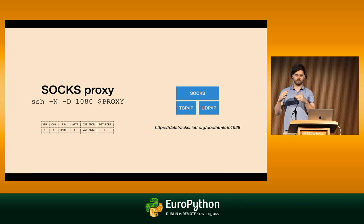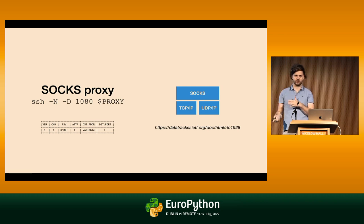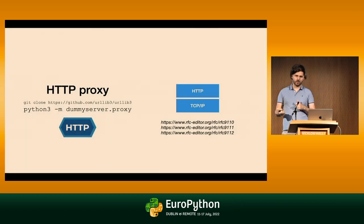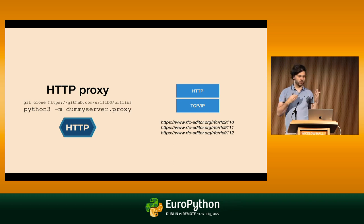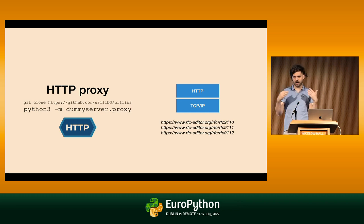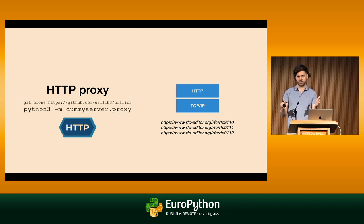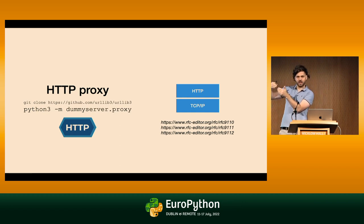I would not expose a SOCKS proxy over the public internet. The protocol is simple, it does not support encryption, and there are only basic authentication options. Compared to SOCKS, HTTP proxies are much more powerful — you get access to everything from the HTTP ecosystem. Do you want encryption? Just use HTTPS instead of HTTP. Do you want authentication? There are many options in HTTP. You can add a reverse proxy in front of a forward proxy — like, why not? It's all HTTP.